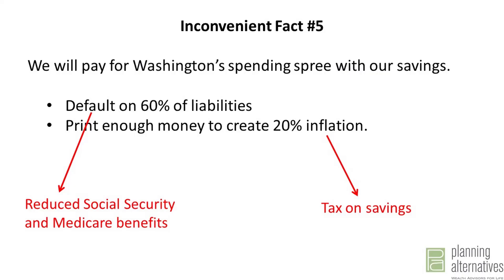No politician will use the word 'default.' They'll say things like 'we're going to make Social Security means-tested,' or 'Social Security was never designed to deal with higher-income earners.' But in fact, what the federal government will be doing is defaulting on promises it has made to Americans. The other path left open to the government is to print money. When the government prints money, it creates inflation. Inflation is a tax on savings — not the government reaching in and taking your physical dollar bills, but the government reaching in and taking the purchasing power of those dollar bills.